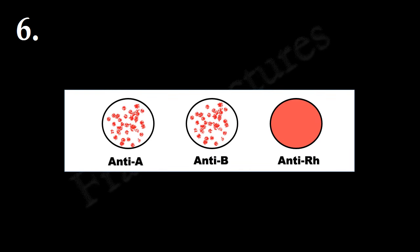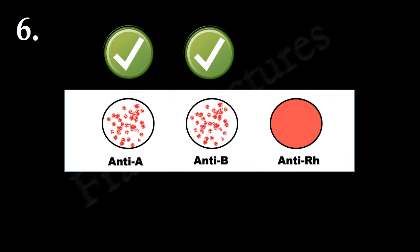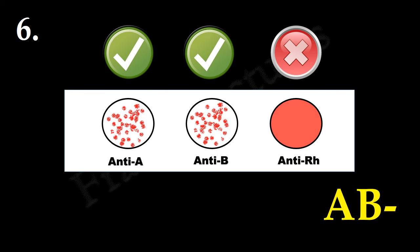Here, agglutination in the anti-A and anti-B circles indicates that both antigen A and B are present. But there is no agglutination in the anti-RH circle, which indicates the absence of RH antigen. Therefore, blood group is AB negative.